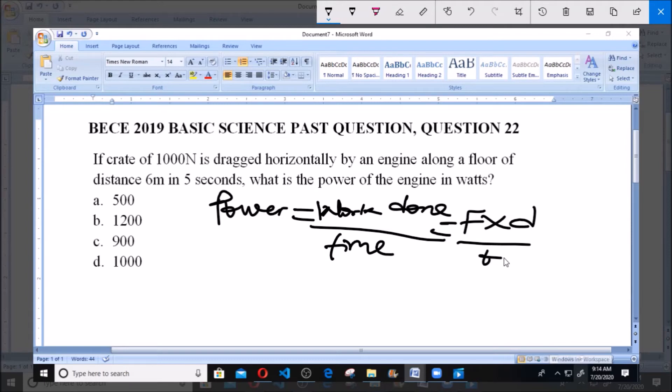And here now they say if a crate of 1000 Newton, so the force to overcome this weight will also be equivalent to 1000. So our force F will be equivalent to the weight, which is equal to 1000 Newton. And then the distance d is equals to 6 meters, and our time t is equals to 5 seconds.